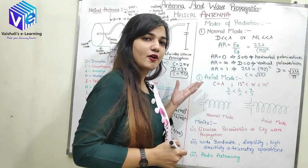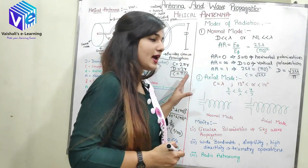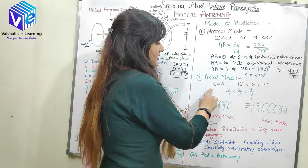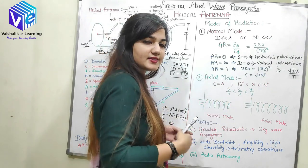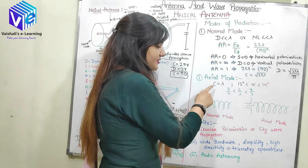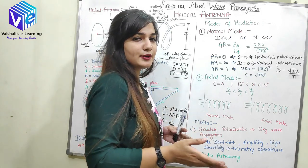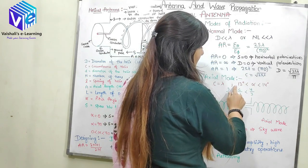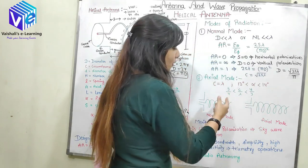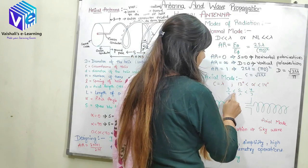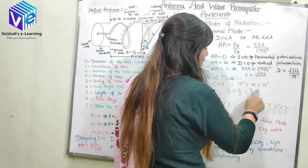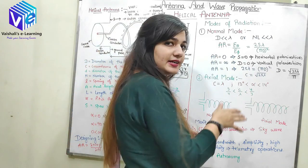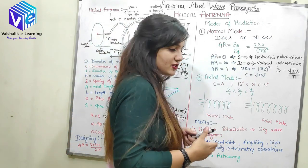For a helical antenna to work in axial mode, the condition is C = λ (circumference equals wavelength), or the pitch angle should be between 13° and 14°, or the ratio C/λ should be between 3/4 and 4/3.